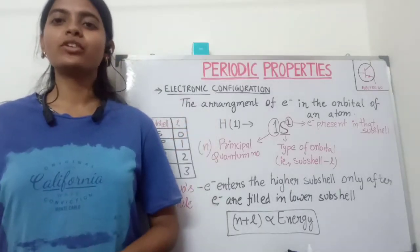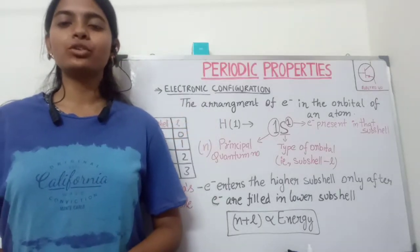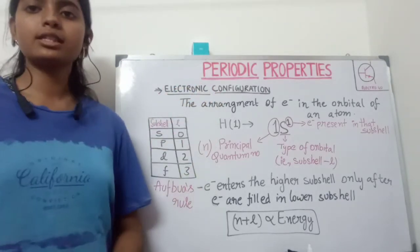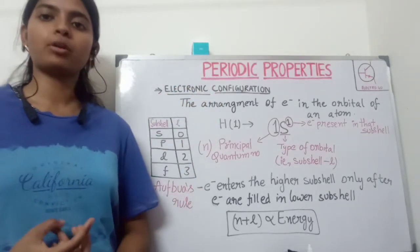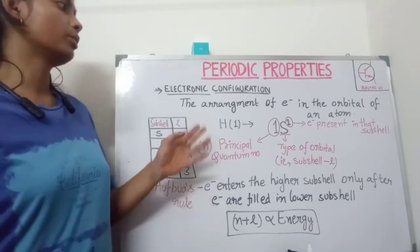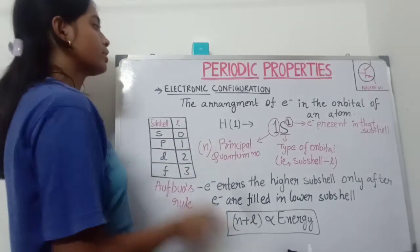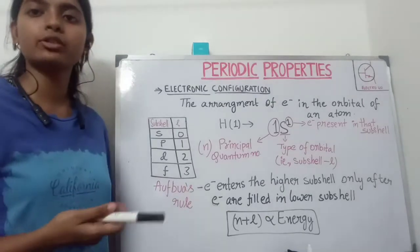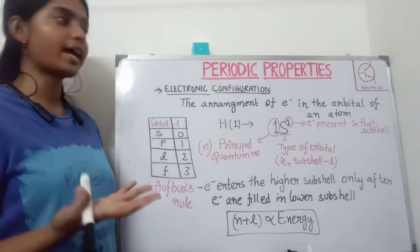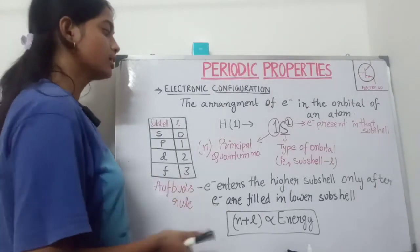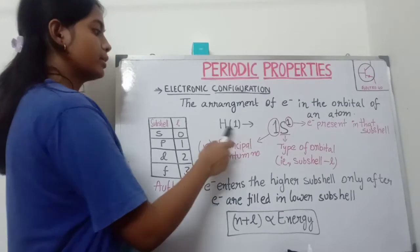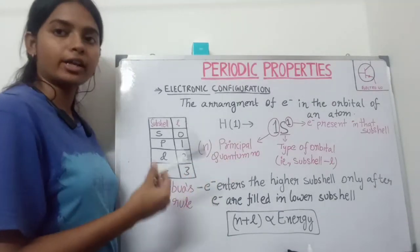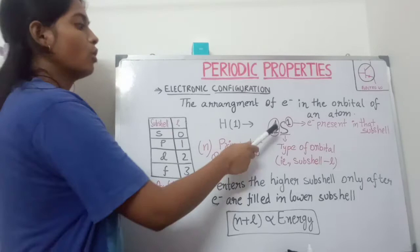Hello everyone, welcome to our channel Electro for you. Today we will study about electronic configuration, and this is our fourth topic from this chapter on periodic properties. Electronic configuration is the arrangement of electrons in the orbitals of an atom. For example, the electronic configuration for hydrogen is 1s1.